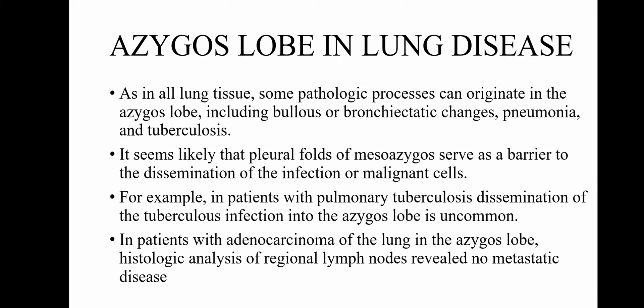For example, in patients with pulmonary TB, dissemination of the tuberculosis infection into the azygous lobe is uncommon. In a study conducted in patients with adenocarcinoma of the lung in the azygous lobe, histological analysis of the regional lymph nodes revealed no metastatic disease.